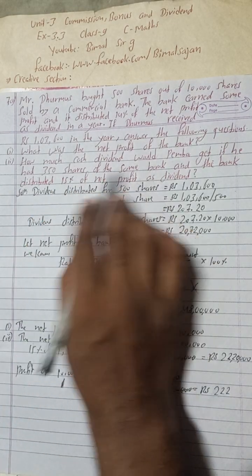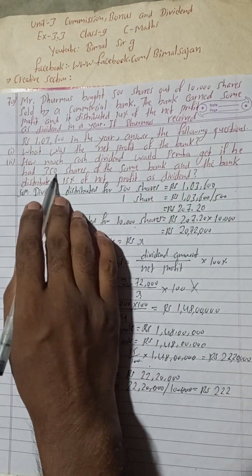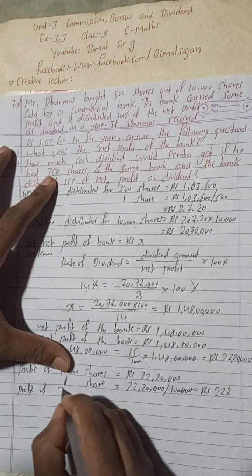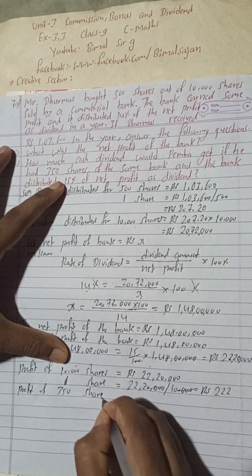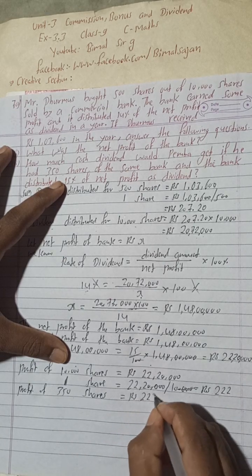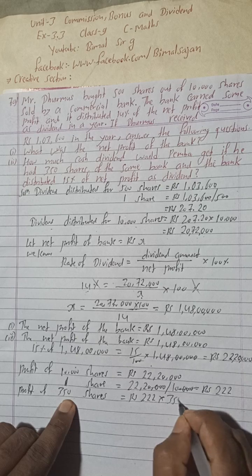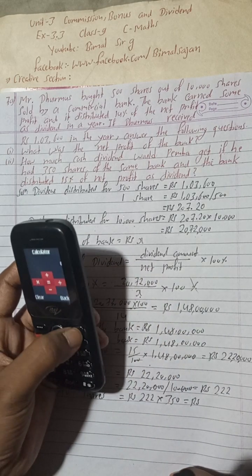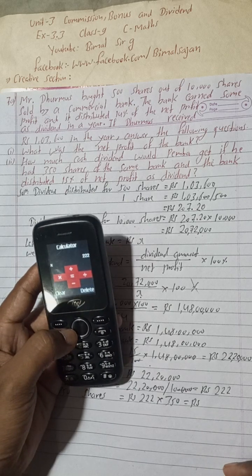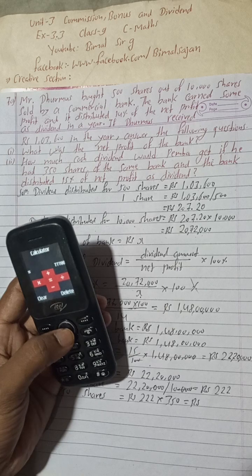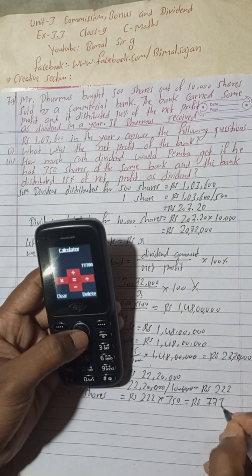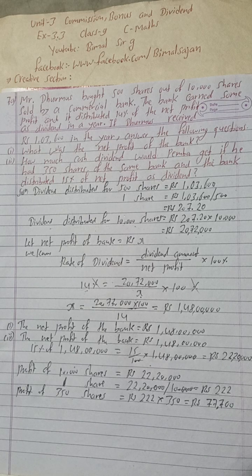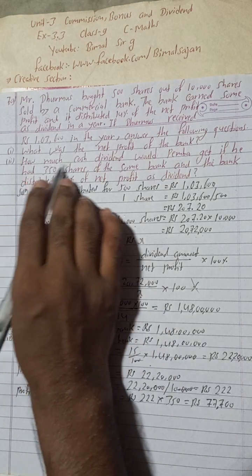Pemba bought 350 shares. So profit of 350 shares equals Rs 222 × 350, which equals Rs 77,700.